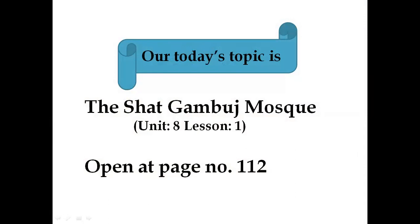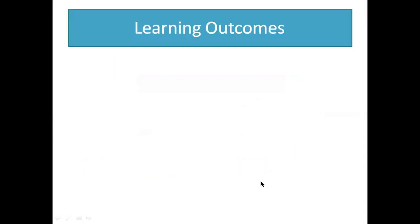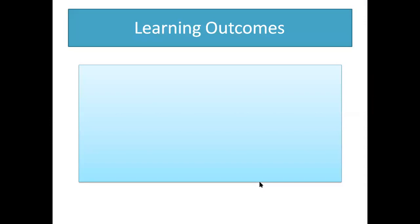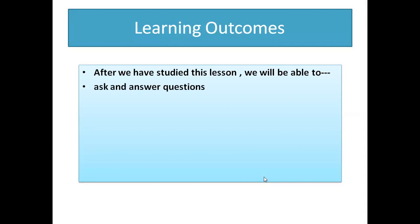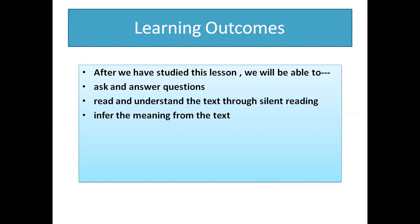You will find it in your EFT book in Unit 8, Lesson 1, at page number 112. Learning outcomes: after we have started this lesson, we will be able to ask and answer questions, read and understand the text through silent reading, infer the meaning from the text, and we will also be able to describe a place.